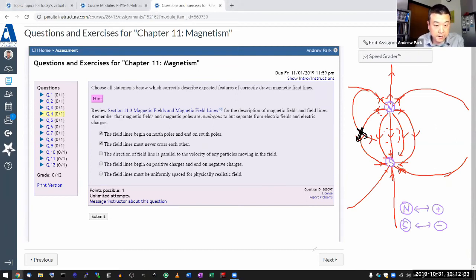The direction of the field line is parallel to the velocity of any particles moving in the field. No, that wasn't the case for electric field either, and it especially isn't the case for magnetic field.